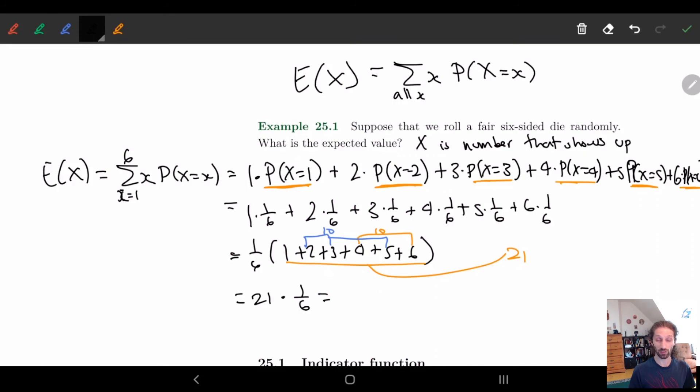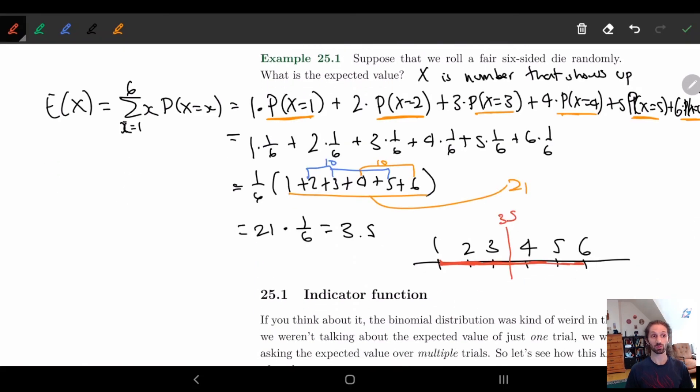And so if you calculate this, we get three and a half, which makes sense. That's kind of the middle, right? So if I do one, two, three, four, five, six, if this is my number line, where's the middle between one and six? If I look at this as my number line here, the middle part here is this right here, which is three point five. So it kind of makes sense that our expected value comes up with three point five.